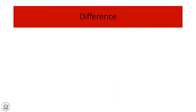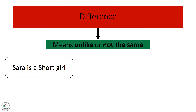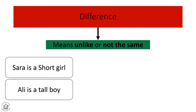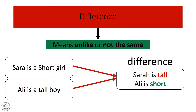What does difference mean? Difference means unlike, or not the same. We will also take an example to clarify it. Sara is a short girl. Ali is a tall boy. The difference between Sara and Ali is that Sara is short and Ali is tall. So this is the difference.